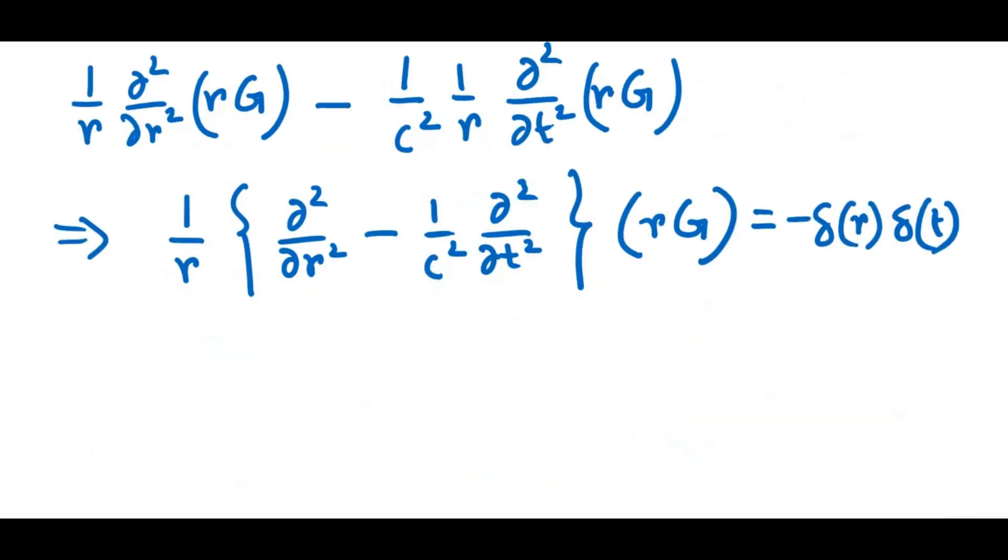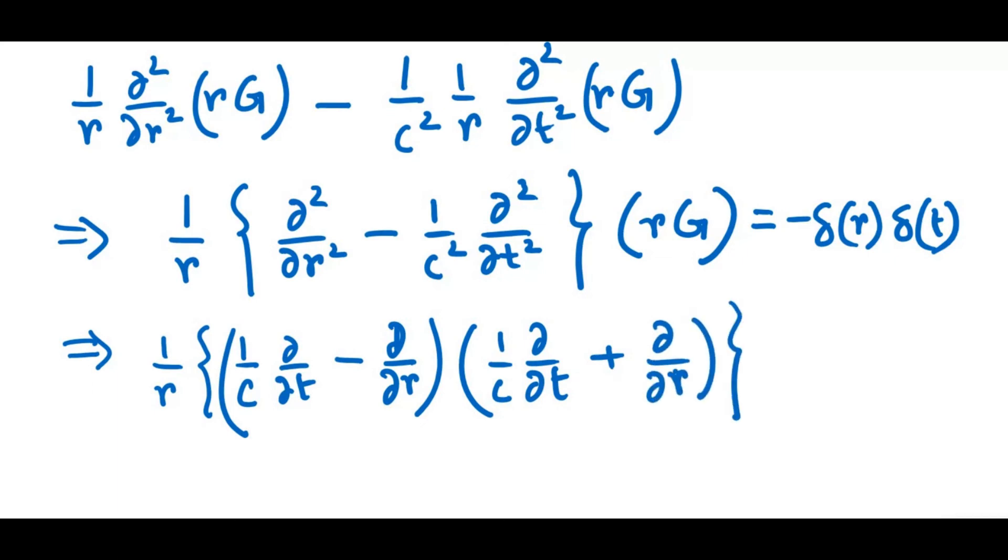Now, since partial derivatives commute with respect to each other, we can write instead, 1 over C times the time derivative minus the spatial derivative, times 1 over C times the time derivative plus the spatial derivative, and on the right hand side, we write simply delta(R) and delta(T). So notice that I have changed the order of the derivatives, and to account for that, I have removed the negative sign on the right hand side.